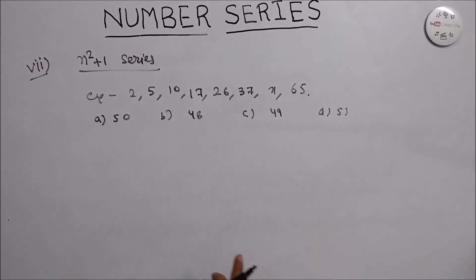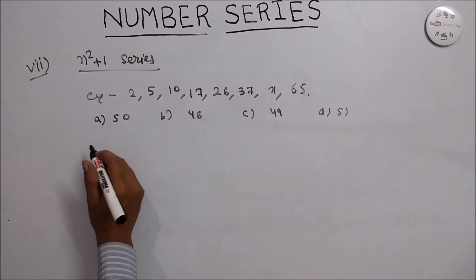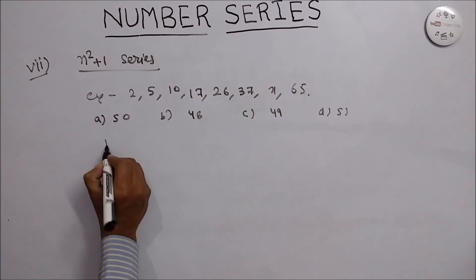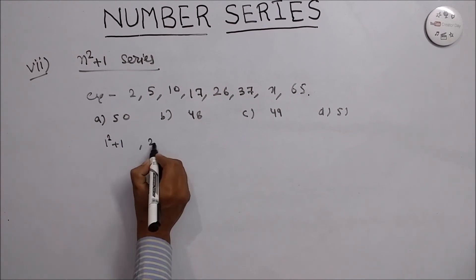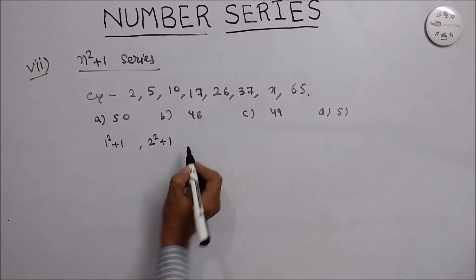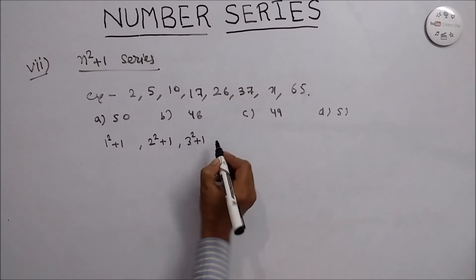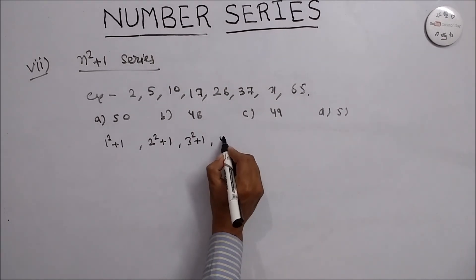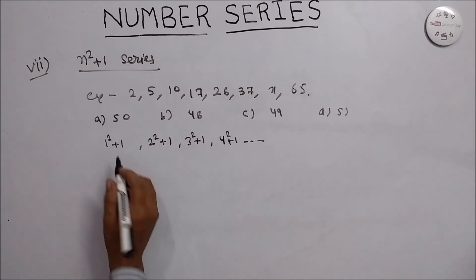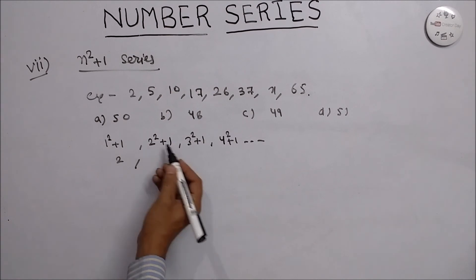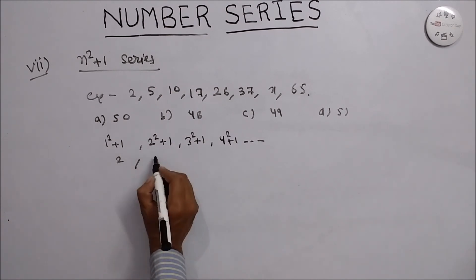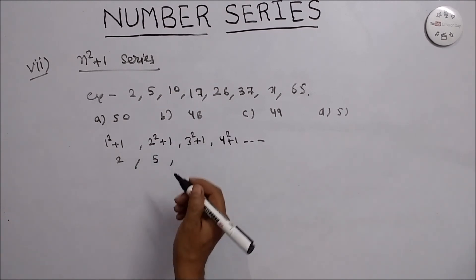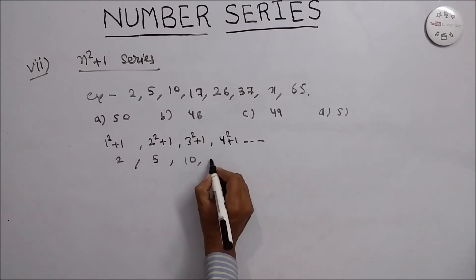If we look at this series, this series will follow this rule n square plus 1. Let's see how. The series looks like 1 square plus 1, 2 square plus 1, 3 square plus 1, and 4 square plus 1, and so on. If we calculate, we get 1 square plus 1 is 2, 2 square plus 1 is 4 plus 1 is 5, 3 square plus 1 is 9 plus 1 is 10, 17.